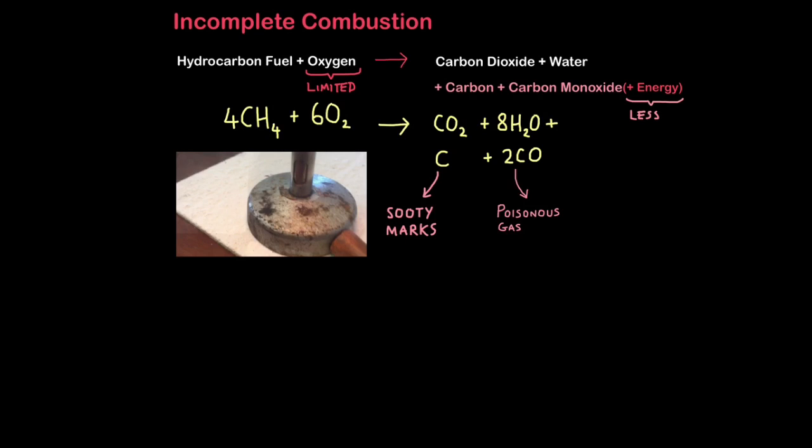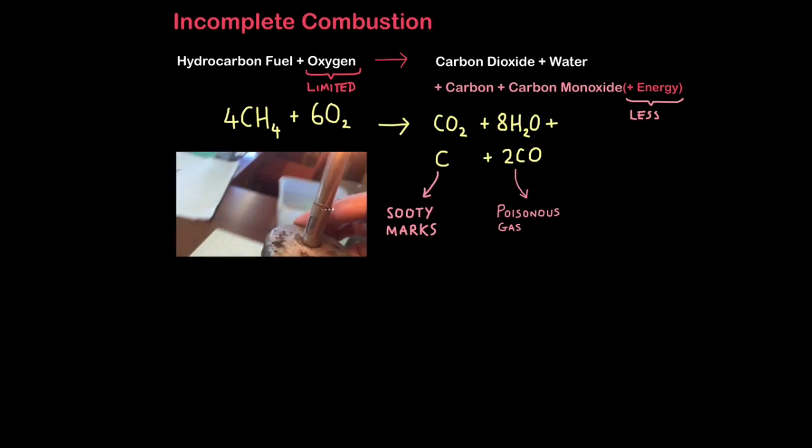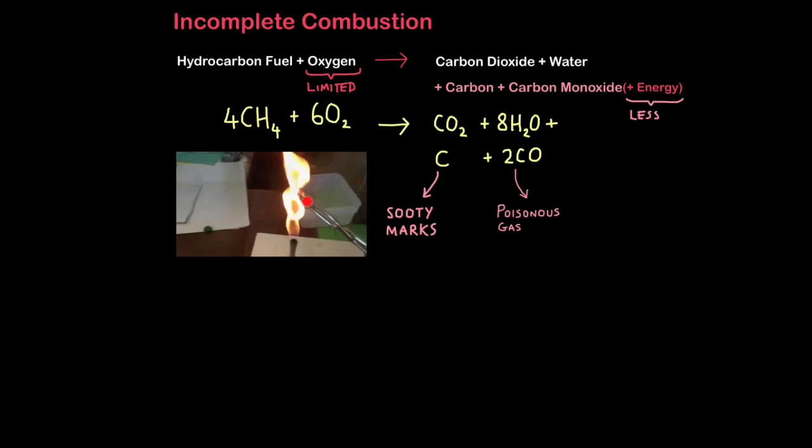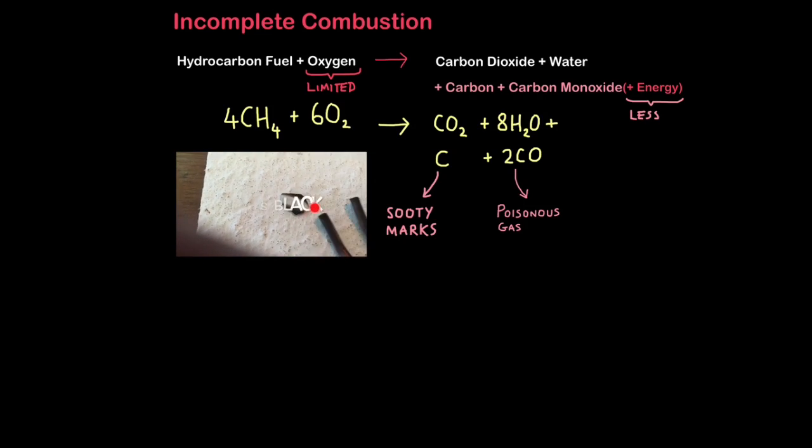Here you'll notice that the Bunsen burner valve is closed, so I am limiting the amount of oxygen that can get inside. Let's see what happens to that clay pot fragment now. So the valve's closed. As you can see, it's an orange flame, not blue, not hot enough, not enough oxygen. And look at the white clay pot fragment. You can see it's black, except for where my tongs were holding it. That's soot or carbon being produced.